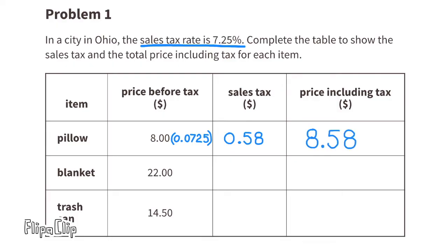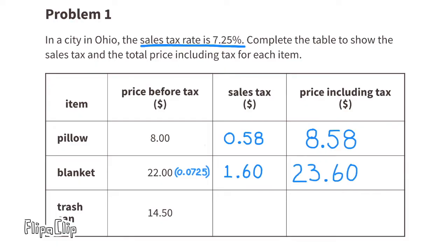The total price for the pillow including sales tax is $8.58. For the blanket: $22 times 0.0725 equals $1.595, which rounds up to $1.60. Twenty-two dollars plus $1.60 equals $23.60 — the total price including tax for the blanket.